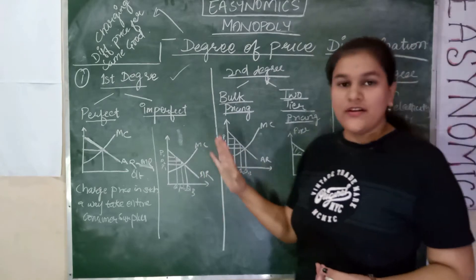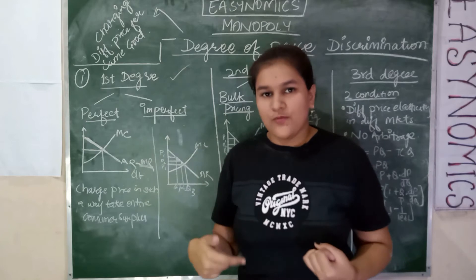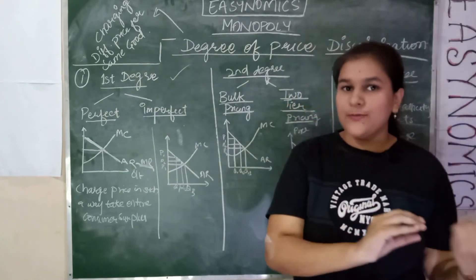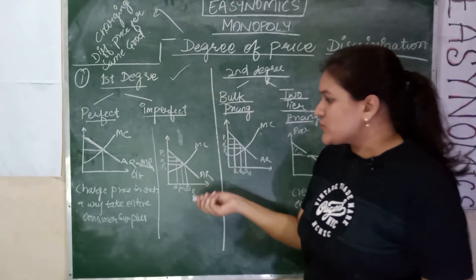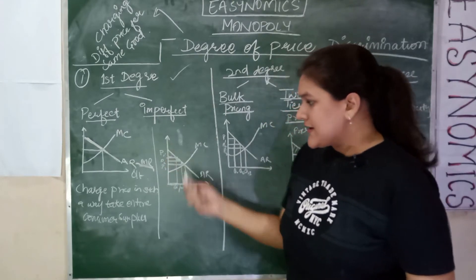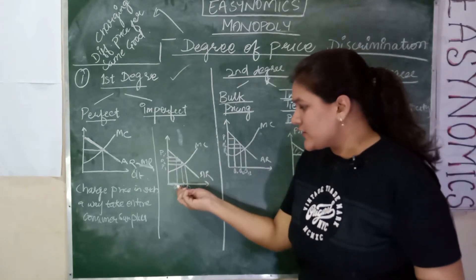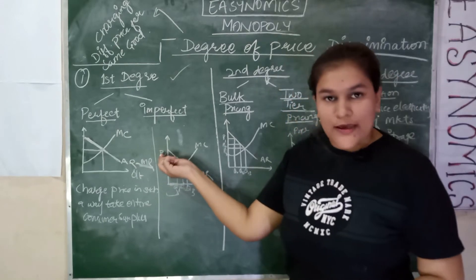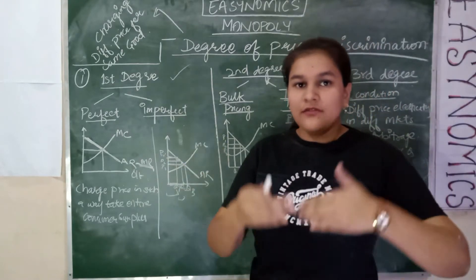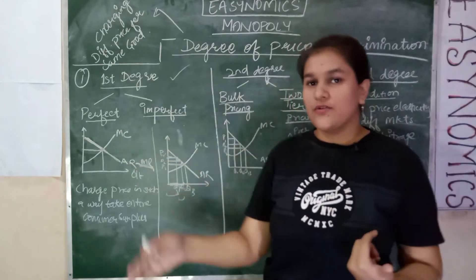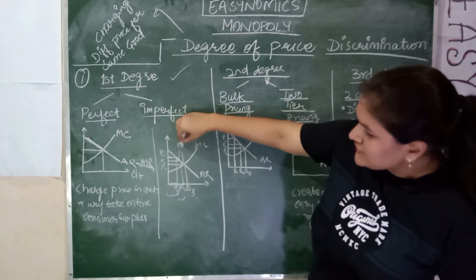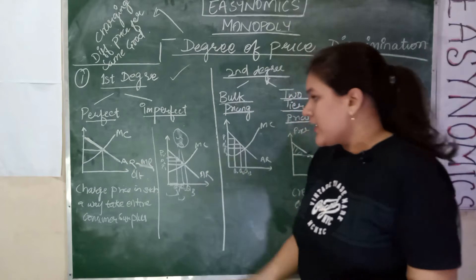Now let's look at imperfect price discrimination. Here, we assume that we cannot charge a different price for each and every unit, but we can charge different prices for some sets of commodities. For example, the first 5 units of a commodity are charged at one price. If you buy up to Q1, you are charged Price 1. After Q1, up to Q2, you are charged Price 2. So if you buy 10 commodities, for the first 5 your price is different, and for the next 5 your price is different. This triangle area represents the remaining consumer surplus in this case of price discrimination.